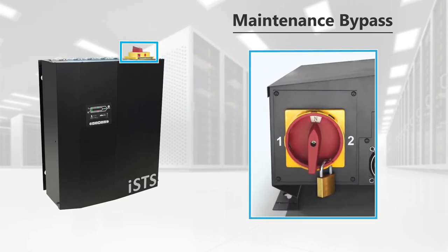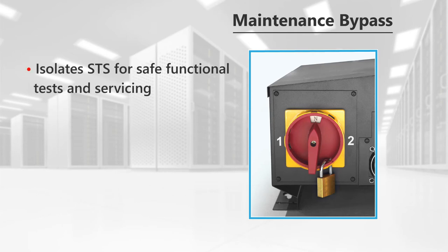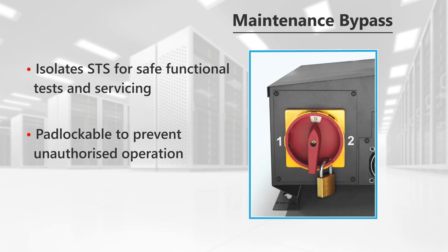The Model W features a maintenance bypass for no-break transfers to either Source 1 or Source 2. Maintenance bypass mode isolates the STS portion and makes the unit safe to perform functional tests and servicing. The switch can be padlocked in any position to prevent unauthorized operation.